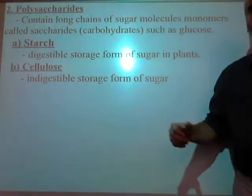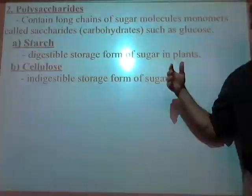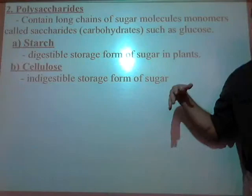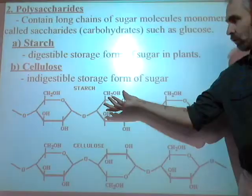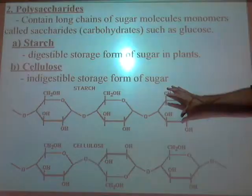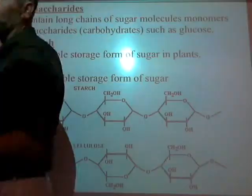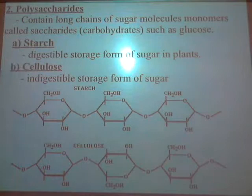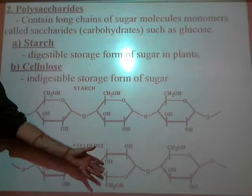Here's the amazing part: the difference between starch — which is in potatoes — and cellulose — which is in paper — is simply that every other monomer unit in cellulose is flipped upside down. That's all it is. They're both made of glucose, but they're linked differently. That's why we can digest starch but not cellulose, and the only difference between them is how they're linked together.